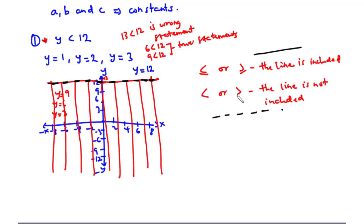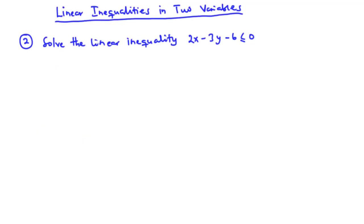In the first example we dealt with a linear inequality of only one variable. Now in the next example we are going to deal with a linear inequality of two variables. We are going to solve the linear inequality 2x − 3y − 6 ≤ 0.